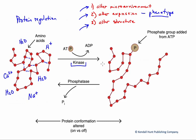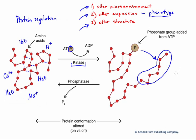Kinases are a very large group of regulatory proteins that take a phosphate group from ATP and attach it onto an amino acid at a very particular location. This alters the interactions between the side chains — the protein drifts into a new shape, which changes its function. This gives us essentially an on/off switch: the kinase adds the phosphate group, activating the protein and giving the cell new function. Conversely, a phosphatase does the exact opposite — it removes that phosphate group, returning the protein to its inactive state.